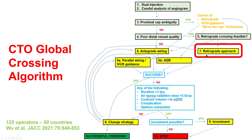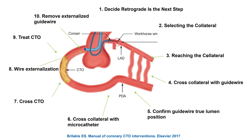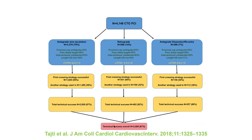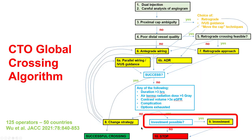Step seven is the retrograde approach, a very powerful technique performed in its own set of steps that allows high success but carries a higher risk of complications. Step eight is the change of strategy — if things do not work, a different approach must be tried. This is a key tenet of both the hybrid algorithm and every subsequent algorithm. This is illustrated in a case series from the Progress CTO registry in which the original approach was successful in about 50–60% of cases, and switching to other crossing techniques was needed before achieving a final success rate of 87%.